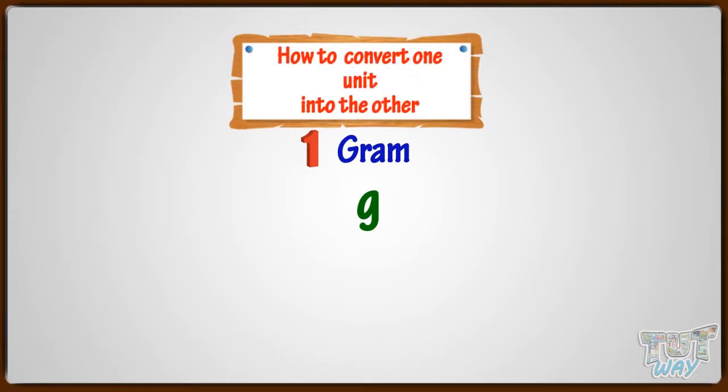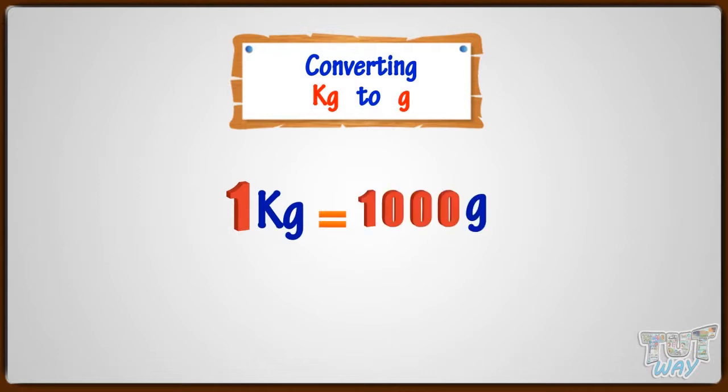Now let's learn how to convert one unit into the other. Converting kilograms to grams. One kilogram equals 1000 grams.